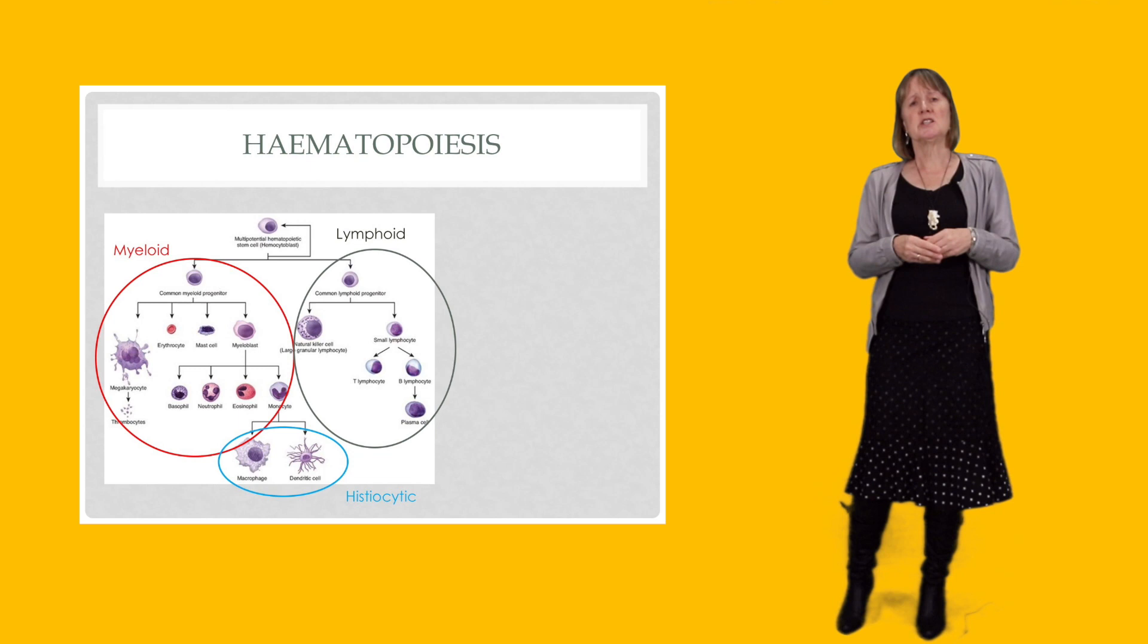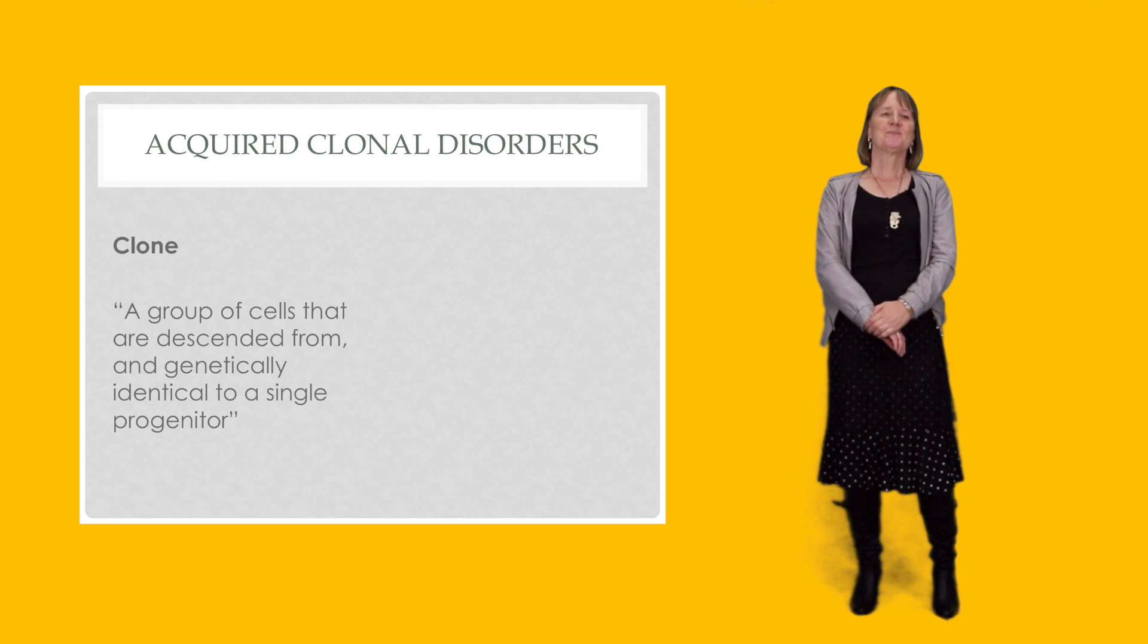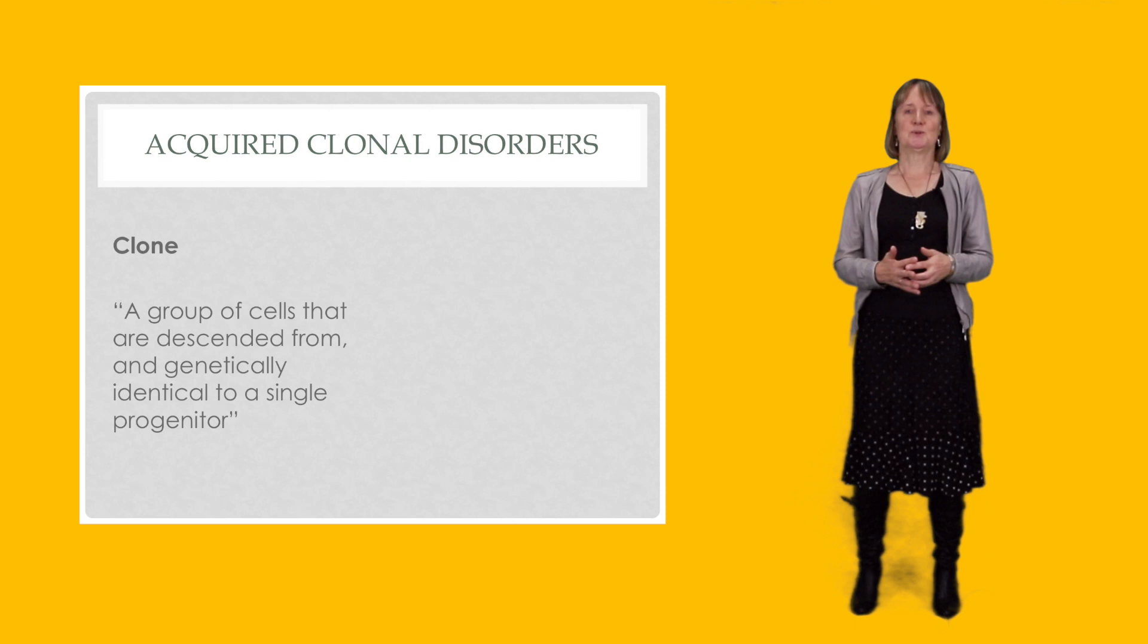And there's a small group of hematological malignancies referred to as histiocytic tumors which correlate to the tissue version of the monocytes, but we're not going to spend a lot of time on them because it's relatively small print.